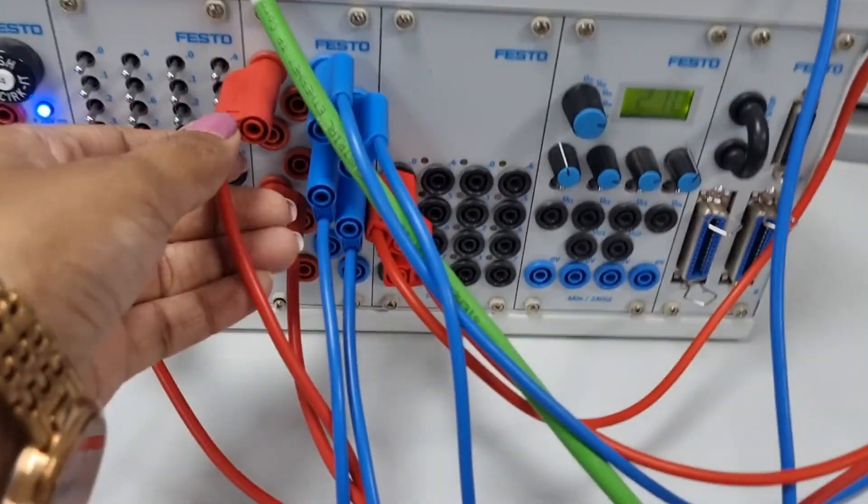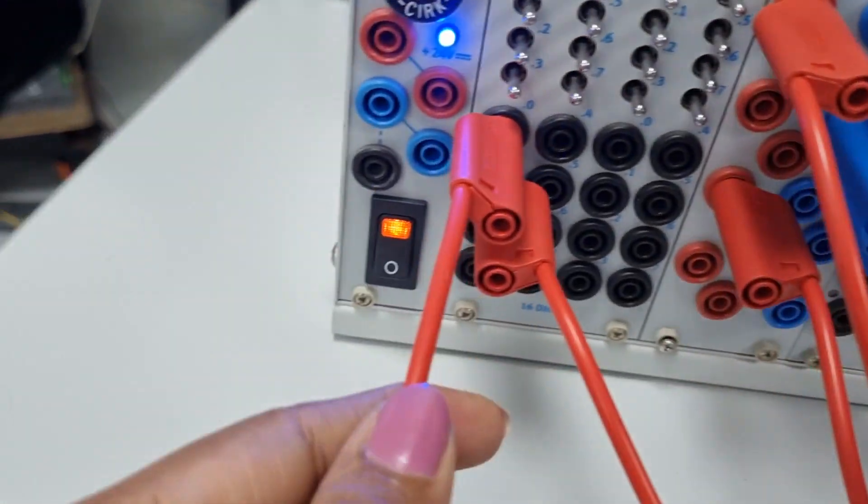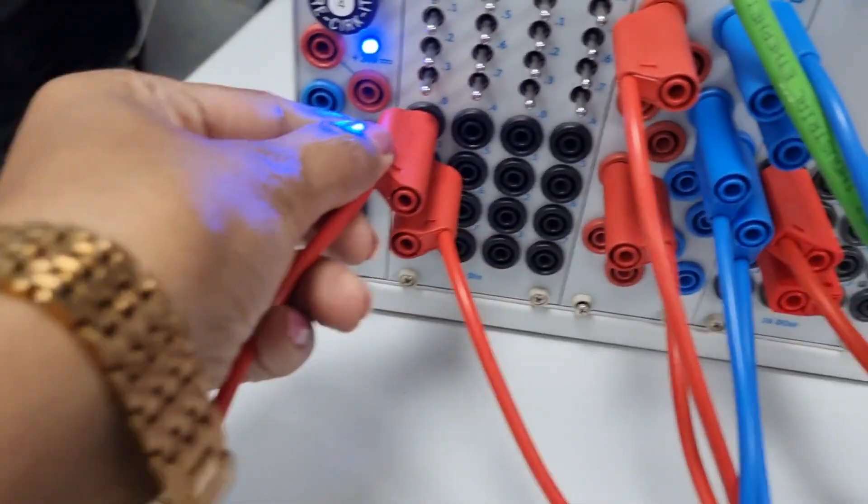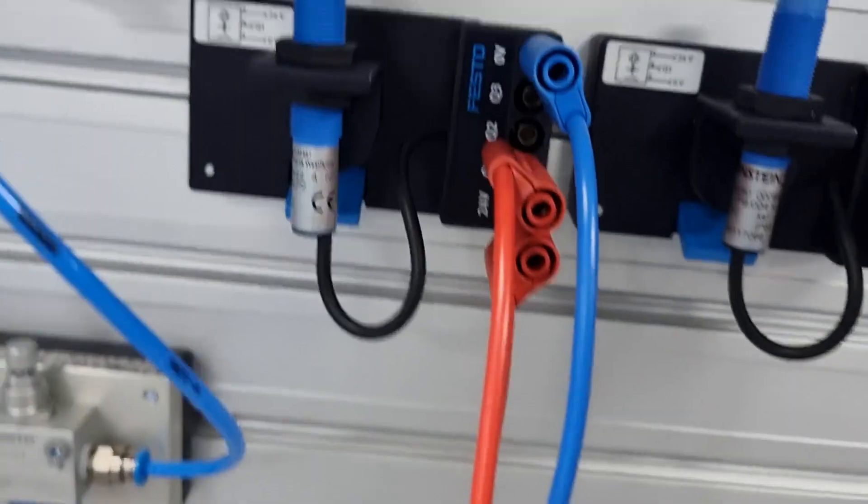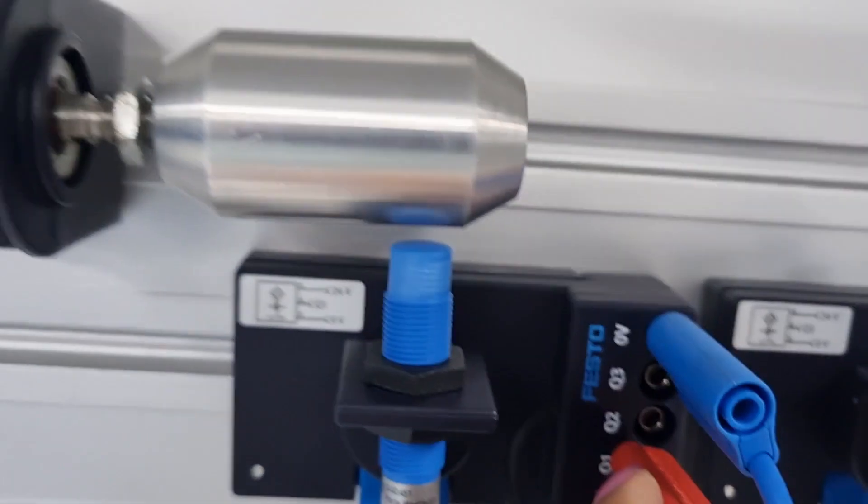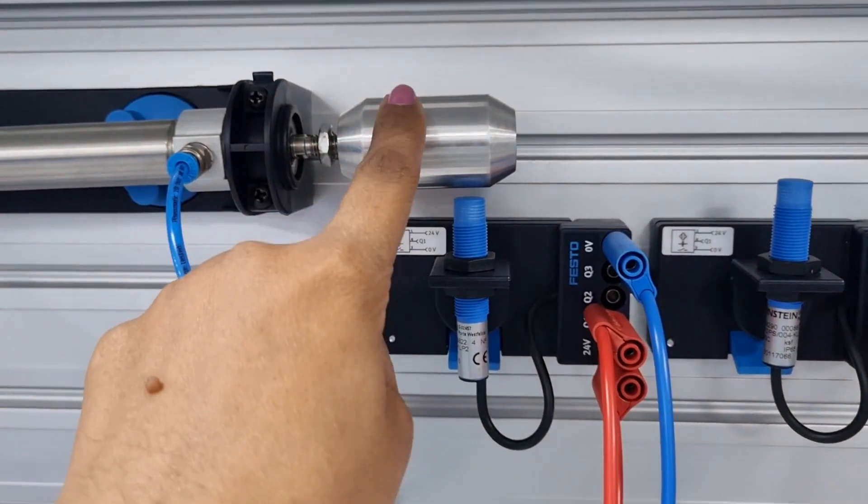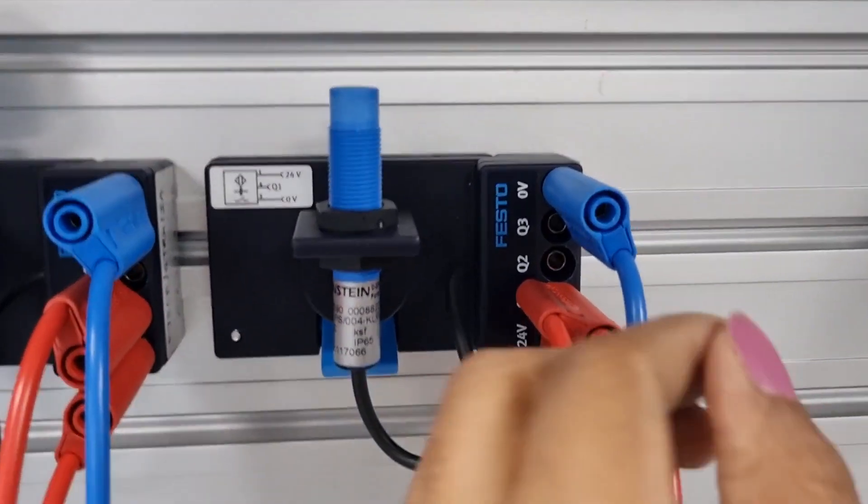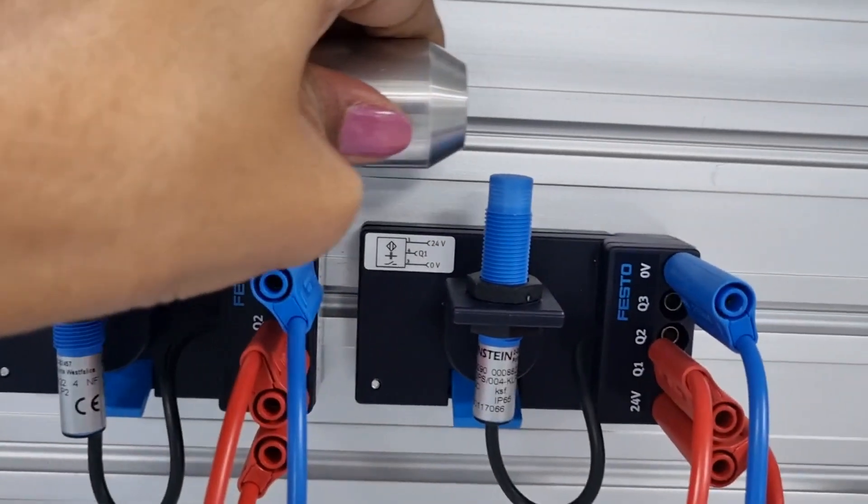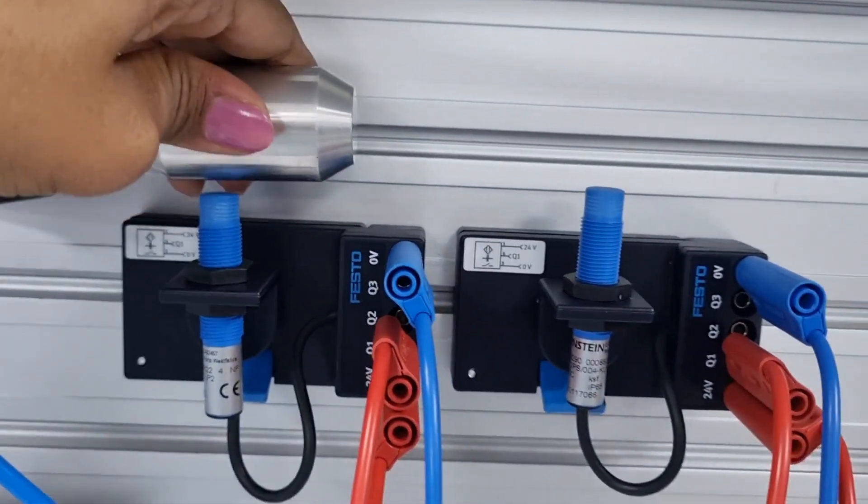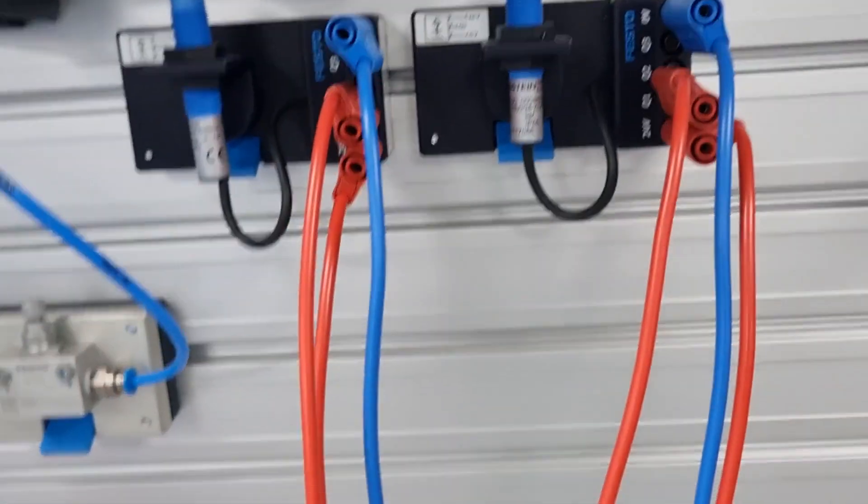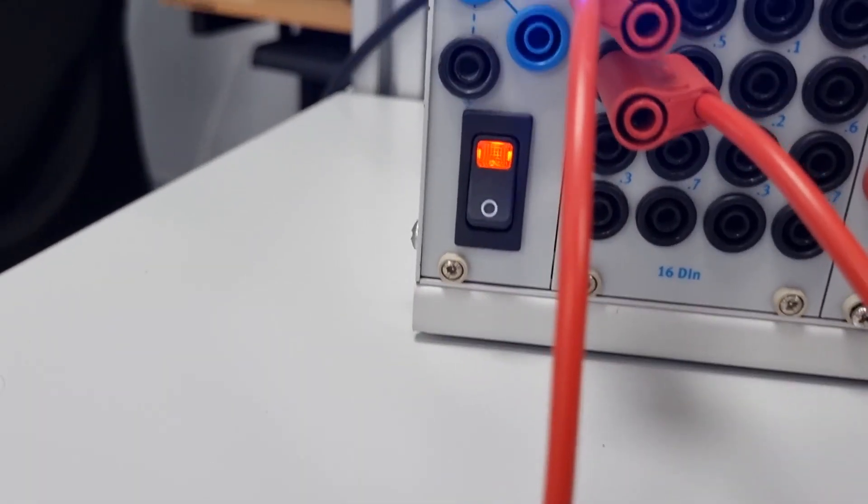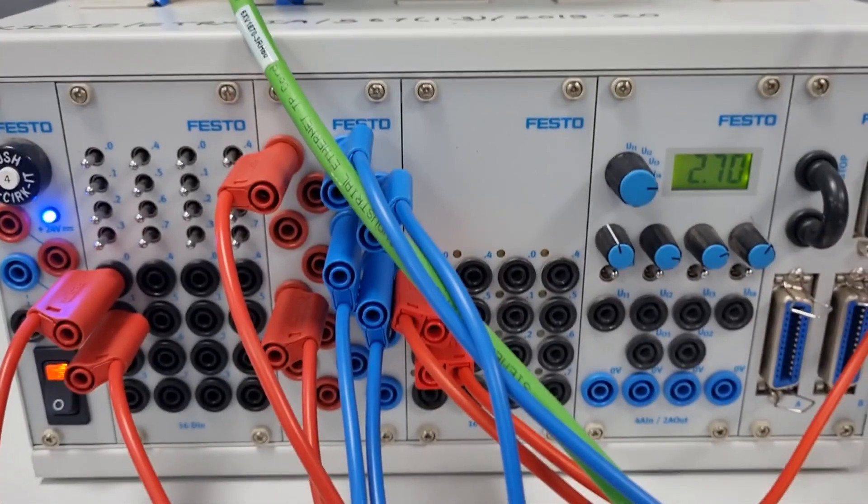These are the inputs. I0.0 is connected to this sensor which detects the retracted end of the cylinder. This Q1 is connected to I0.0. Similarly, this Q2 which detects the extended position of the cylinder is connected to I0.1.